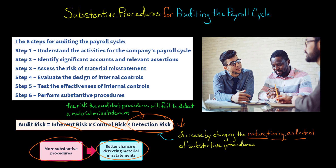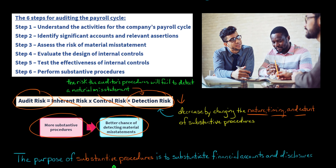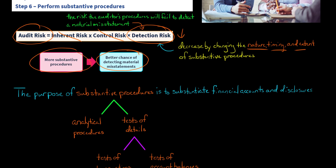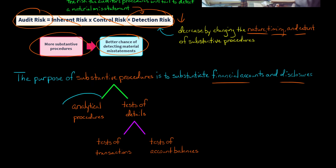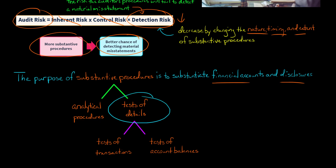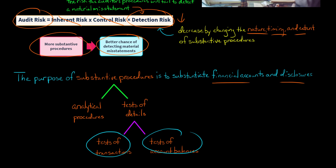So if the auditor wants to reduce detection risk to keep audit risk at an acceptable level, they need to do more substantive procedures. The purpose of substantive procedures is to substantiate financial accounts and the related disclosures. We have two different categories of substantive procedures: analytical procedures, which focus on determining the plausibility of relationships between different accounts, and tests of details, which can be further broken down into tests of transactions and tests of account balances.